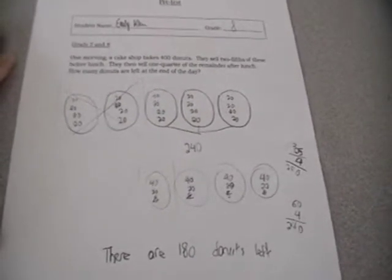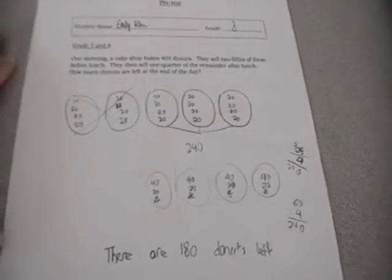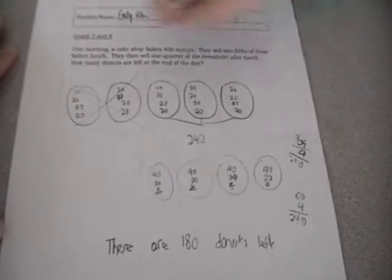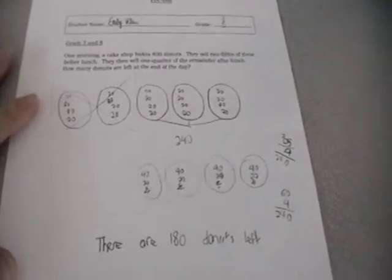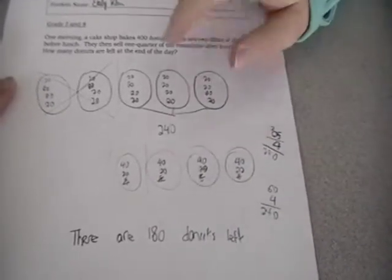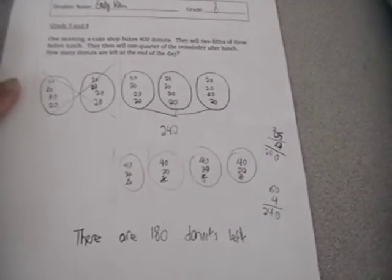They said that they sold two-fifths of them, so I took away the two-fifths, these two-fifths of the donuts. So those were gone. And then I added these three groups up together and there was 240.